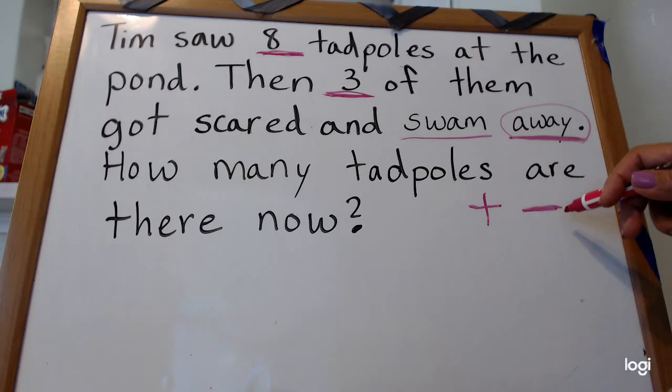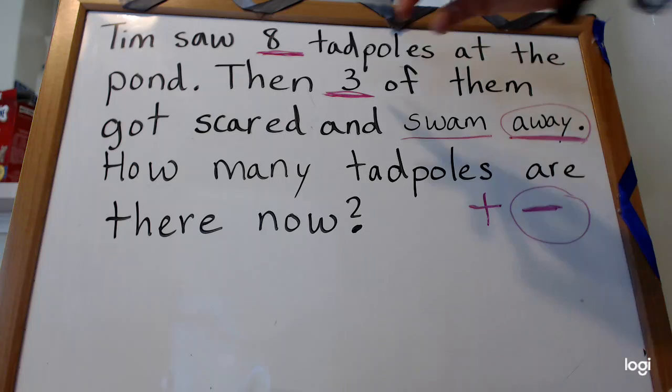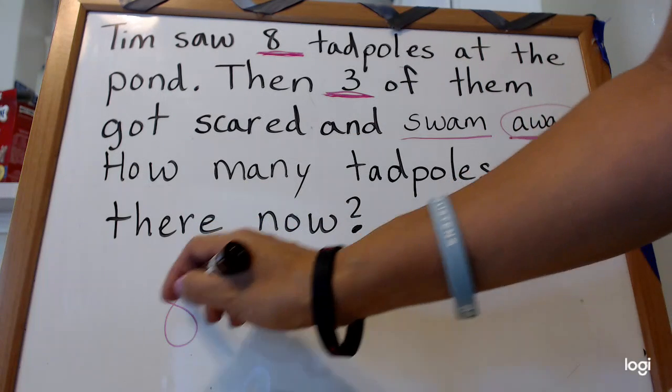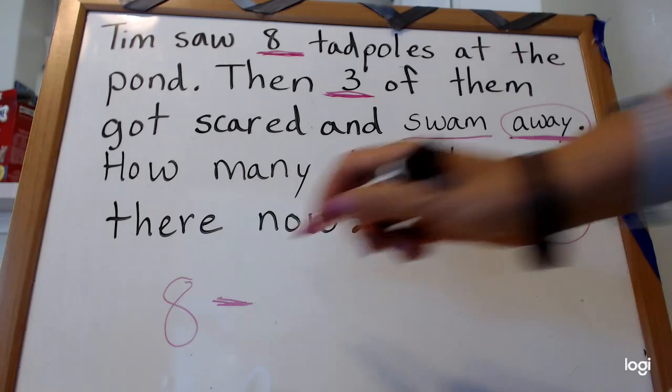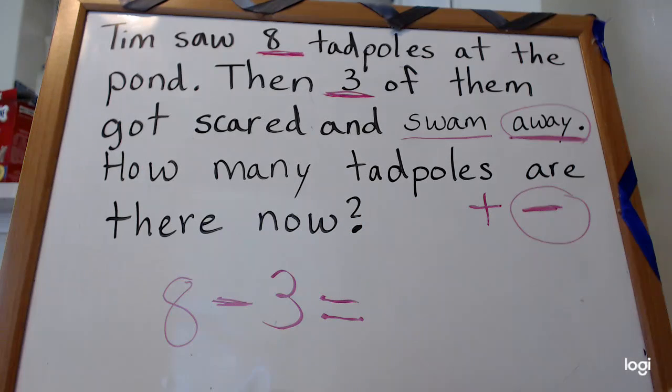So now I can write my equation to solve it. So first I write 8, the minus sign, 3, equals. Okay, from here I can solve it by using circles or my number line, but let's first use circles, then we can use our number line later.